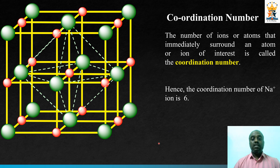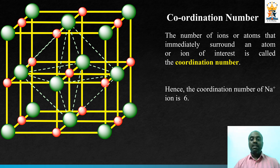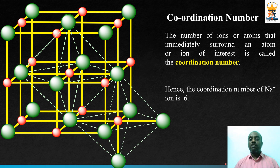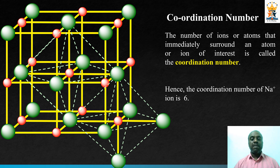If we consider another sodium ion in the structure, it is also placed in the octahedral hole formed by 6 other chloride ions. Only 4 chloride ions may be visible in the particular unit cell; the other 2 come from the immediately adjacent unit cells. All sodium ions are placed within the octahedral void created by 6 chloride ions.